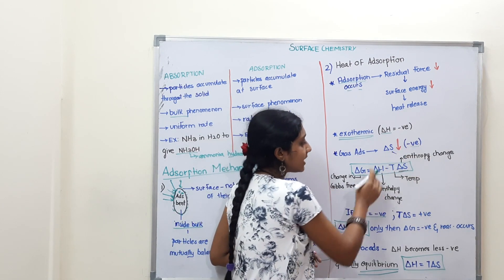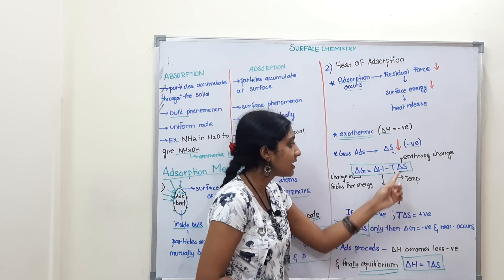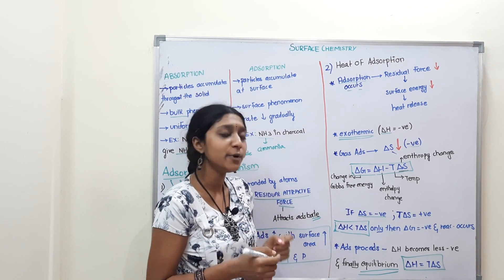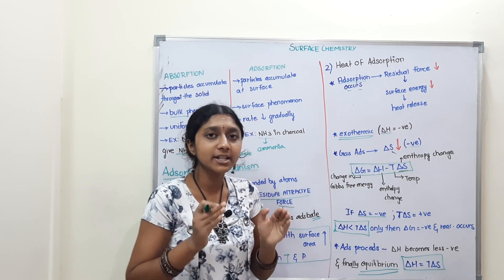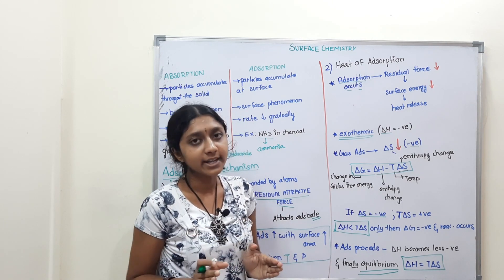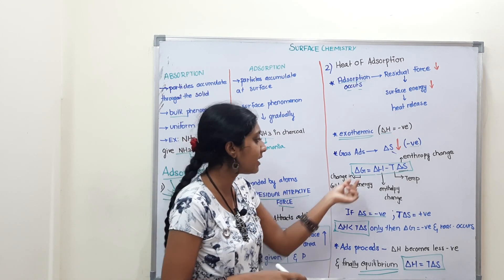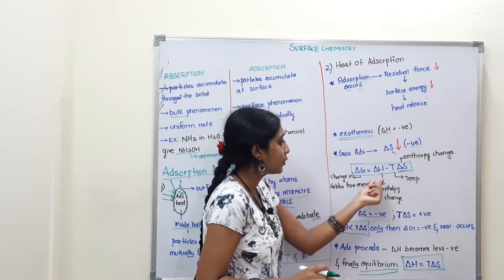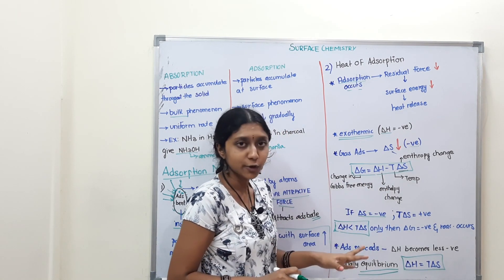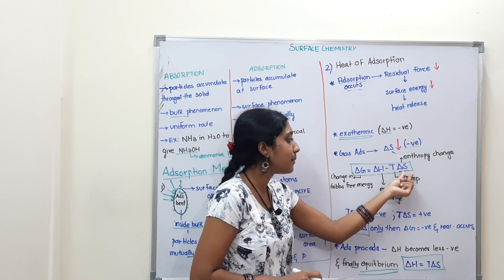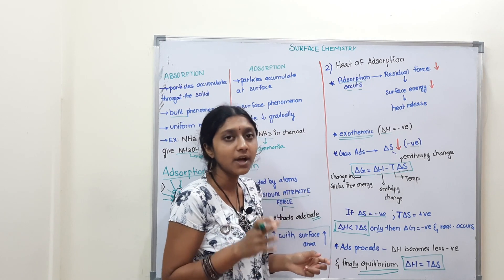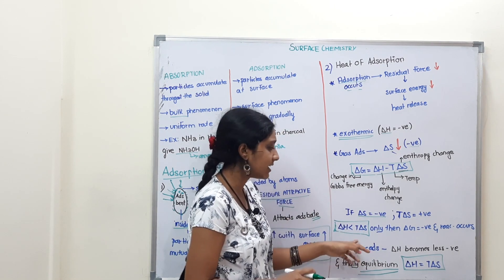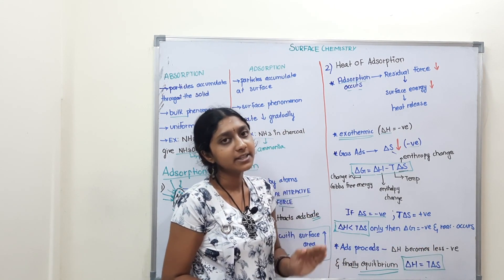Now, ΔH is negative and ΔS is negative, so TΔS is also negative — making −TΔS positive. For the reaction to be spontaneous, ΔG must be negative. For ΔG to be negative, ΔH must be less than TΔS in magnitude. That is, |ΔH| must be greater than T|ΔS|, so that ΔG remains negative and adsorption proceeds spontaneously.